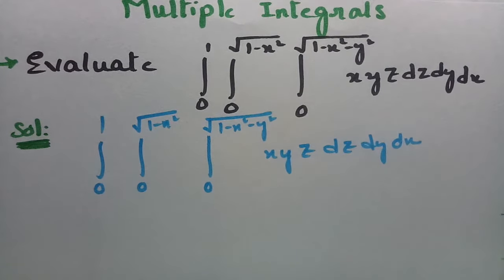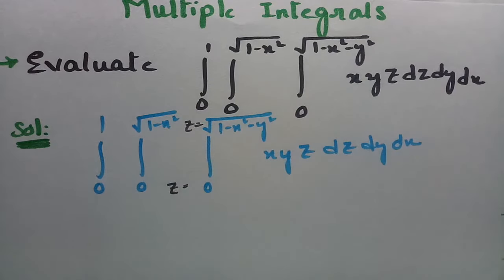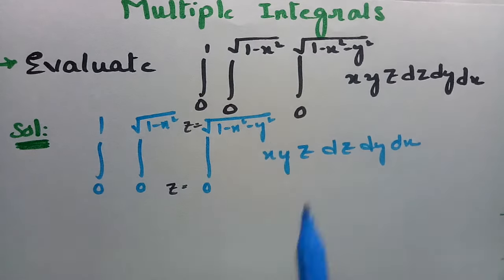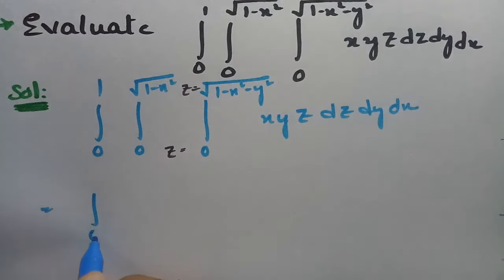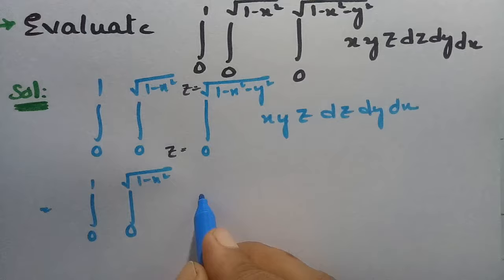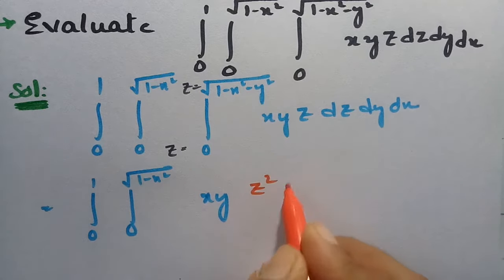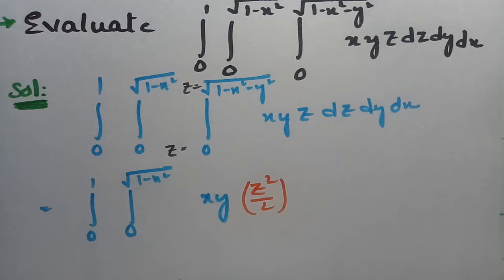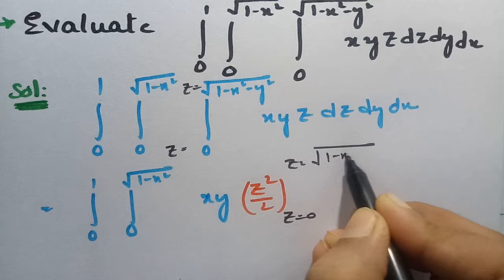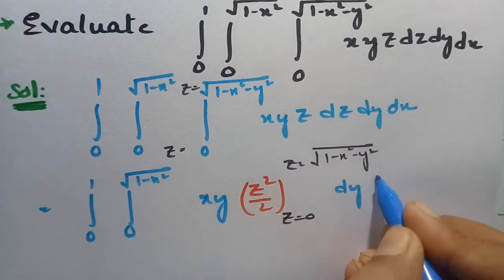First of all we have to identify the limits. The z limits are: z varies from 0 to √(1−x²−y²). We will first integrate with respect to z, treating x and y as constants, giving us z²/2 evaluated between z=0 and z=√(1−x²−y²), then dy dx.